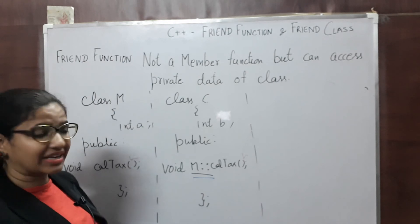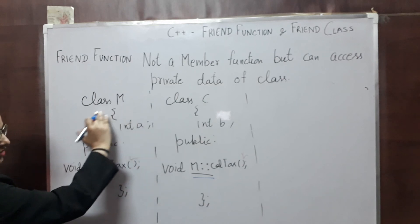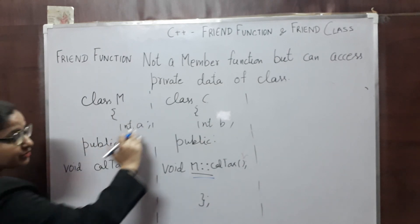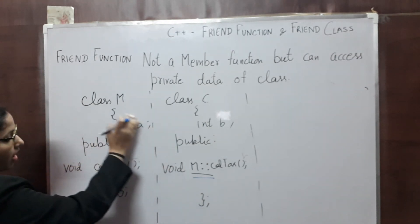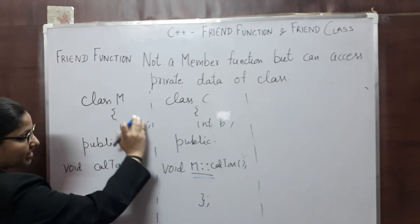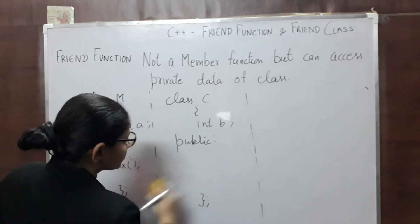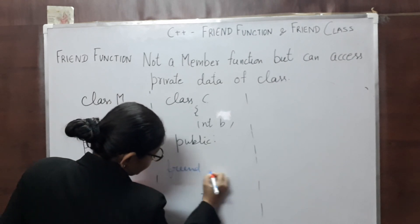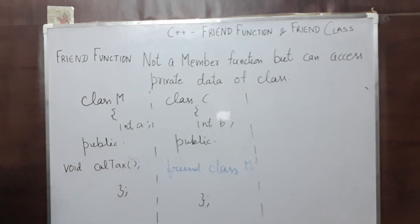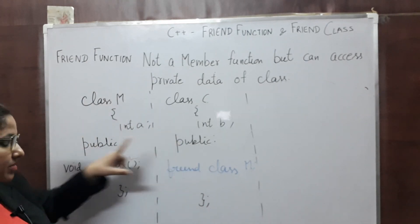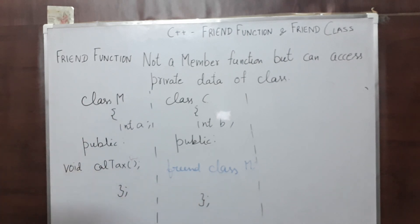The third point is the friend class. Suppose you want to make all the member functions of class M as friend functions of class C. What you can do is write 'friend class M' inside class C. With this, you are making M a friend class of class C, meaning all the member functions of class M will become friend functions of class C. Thank you.